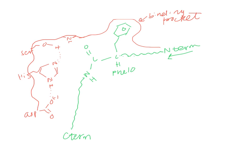The bond that's going to be broken is on the C-terminal side of the residue that was picked. We're only breaking the bond on the C-terminal side of phenylalanine-10, not both sides of phenylalanine or all peptide bonds in the peptide. This state — enzyme and substrate bound together with no reaction yet — is ES.